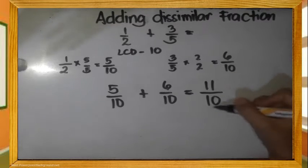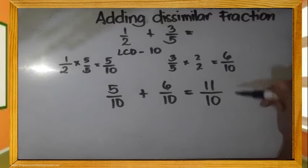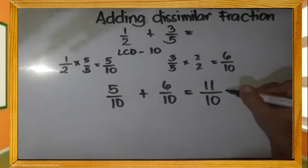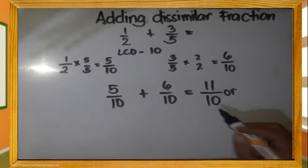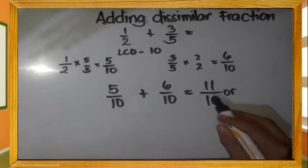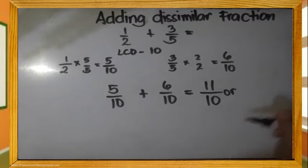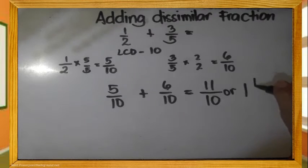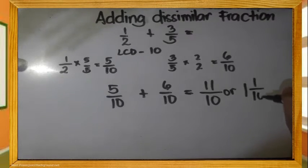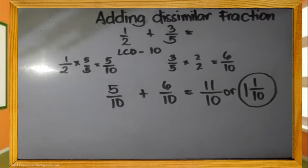Since this is an improper fraction, we need to simplify it. How many 10s are in 11? That is 1, with a remainder of 1. Then copy the denominator. So the final answer is 1 and 1 tenths.